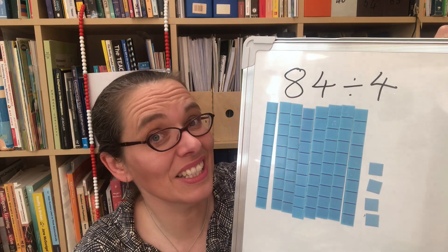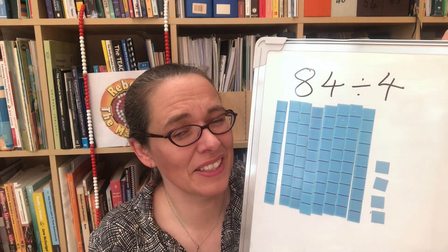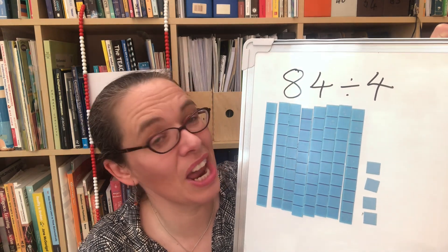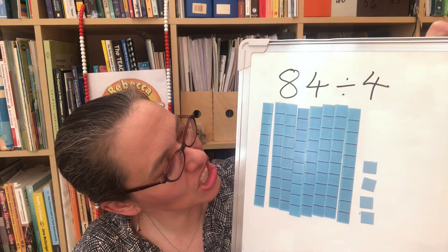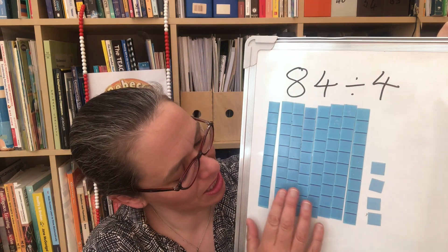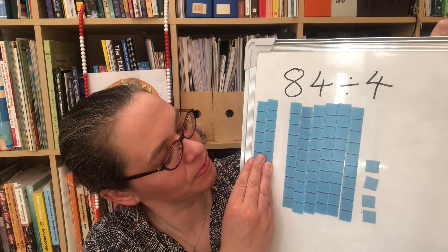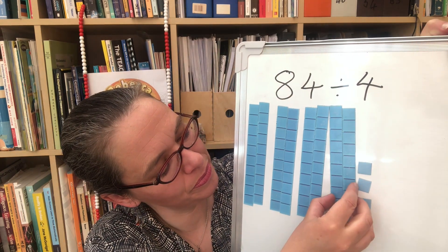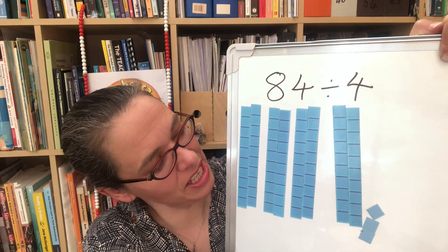If they want to do that, it's a good idea to let them do it until they find that the answer is 21 — there are 21 groups of four — and then to point out there's a much quicker way, which is to think of division as being about sharing fairly. We want to share our 84 fairly between four people or into four groups, and if we make a start with that, we can put two tens in each group and a one in each group.